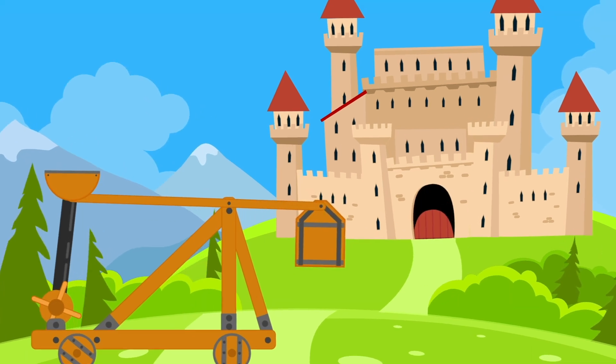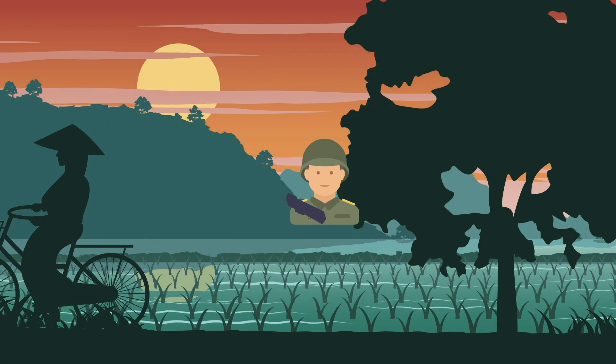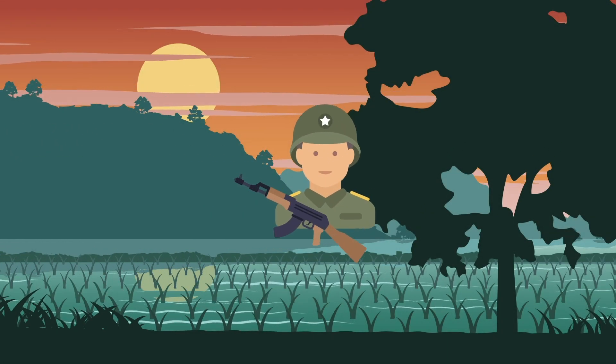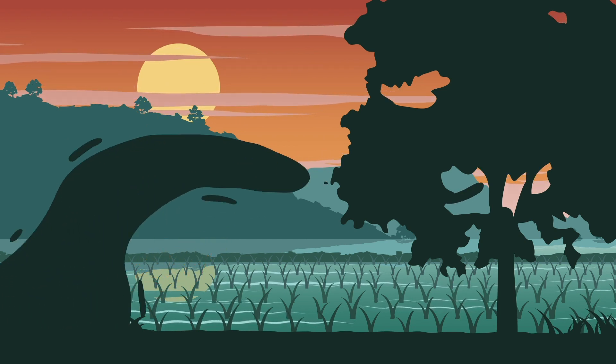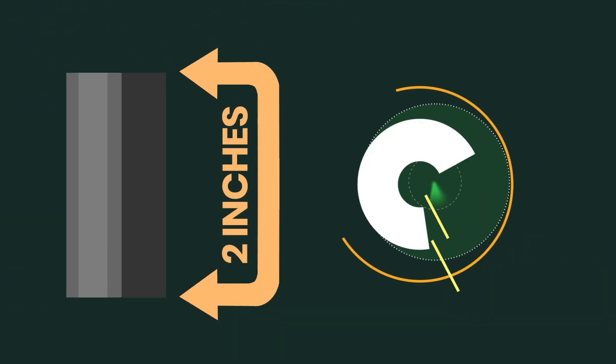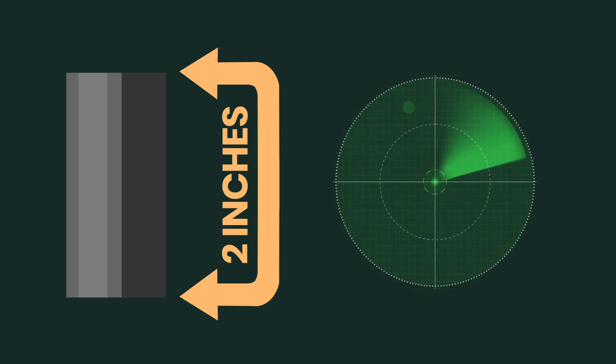Perhaps the most notable use of kinetic energy projectiles in recent history occurred during the Vietnam War, when the USA regularly dropped what they called lazy dog bombs. These were essentially metal cylinders, less than 2 inches long, that were dropped by the hundreds from planes onto the battlefields below.